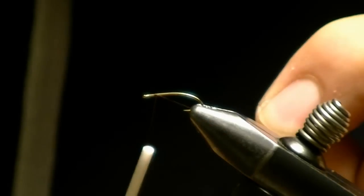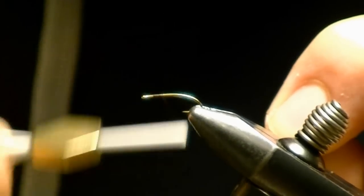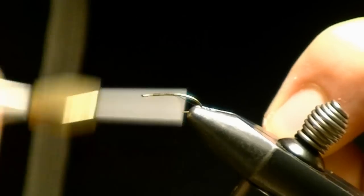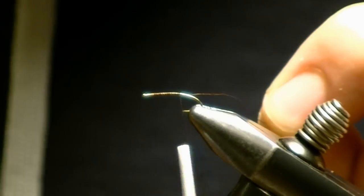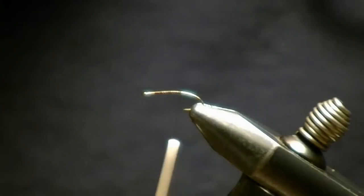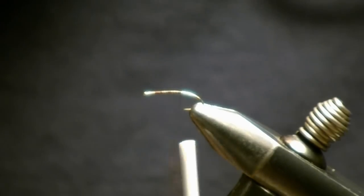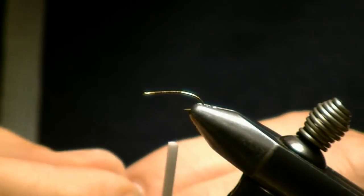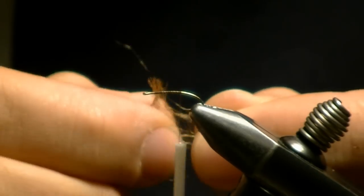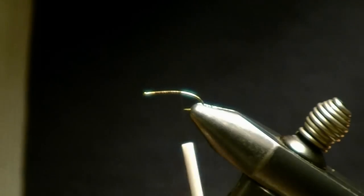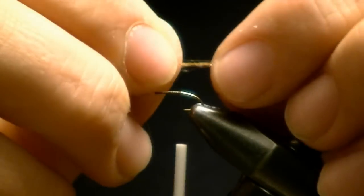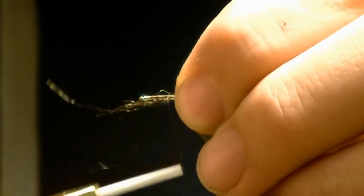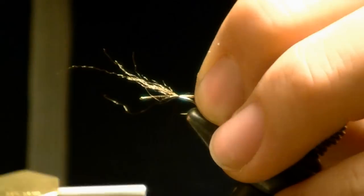I've got a 200R size 16 hook, 8-op Brown thread. I'm going to start my thread and move to the rear. Take a piece of hare from the ear and just kind of thin it out, and tie it on the back.